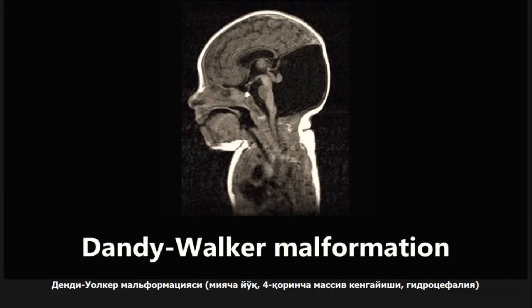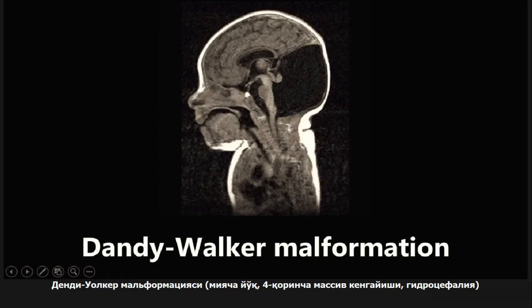This next one is an example of a Dandy-Walker malformation. What happens here is you have the absence of the cerebellum, which causes a massive dilation of the fourth ventricle — this whole black space we're seeing is actually the fourth ventricle. It's also associated with hydrocephalus, since the massive ventricle fills with CSF and becomes overloaded.